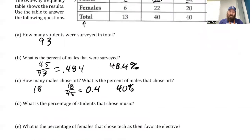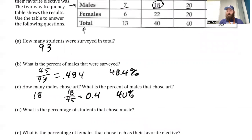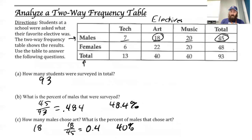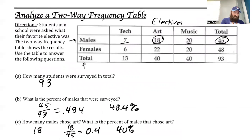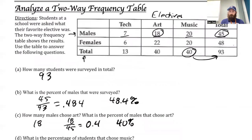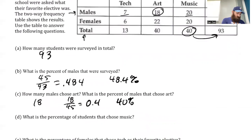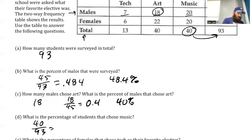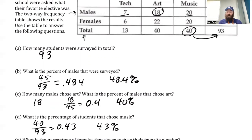What is the percentage of students that chose music? So this is just all students. I want to look at all the music students, which is 40, out of the total number, which is 93. So that's 40 students out of 93. We divide that out and I get 0.43, so we'll round there — 43% when I change that into a percentage.